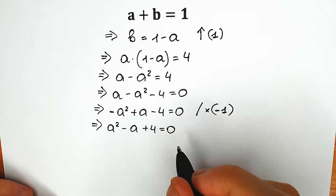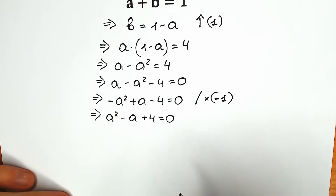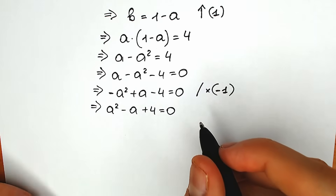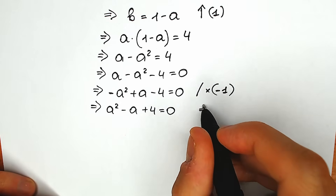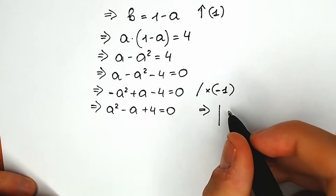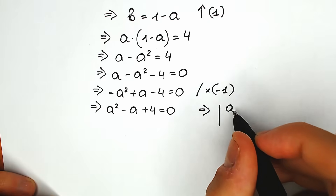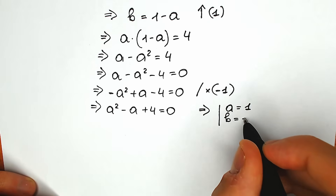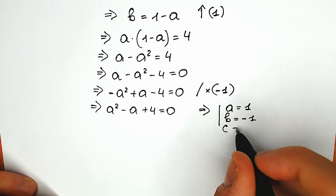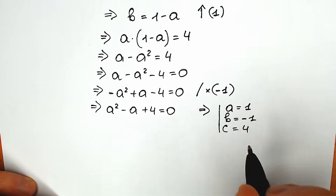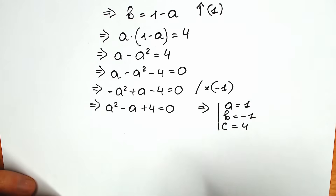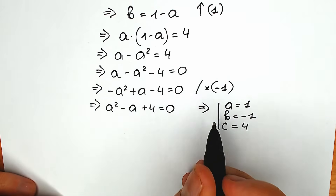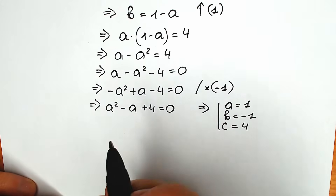There are many approaches to solve this quadratic equation but I'll show the basic one — the method of coefficients. We identify the coefficients: a equals 1, b equals minus 1, and c equals 4. These are our coefficients and of course we need to find the discriminant, plugging all of these into our formula.